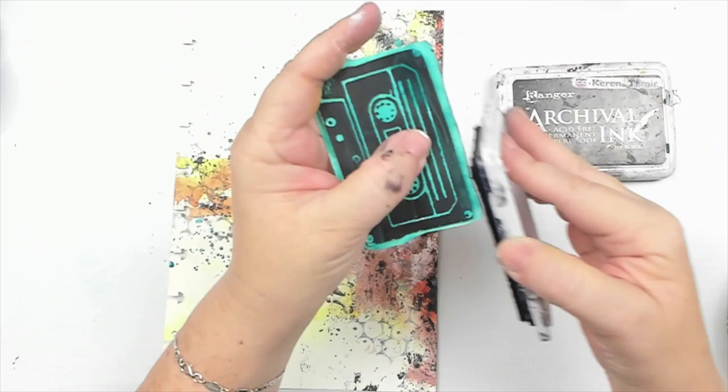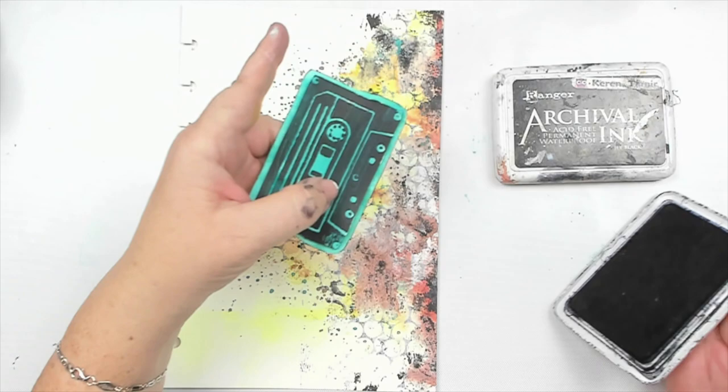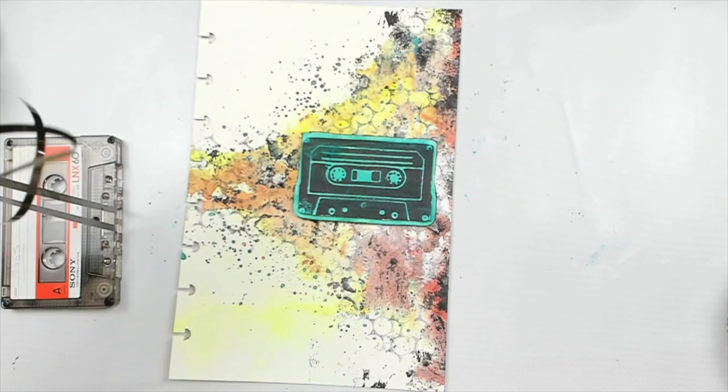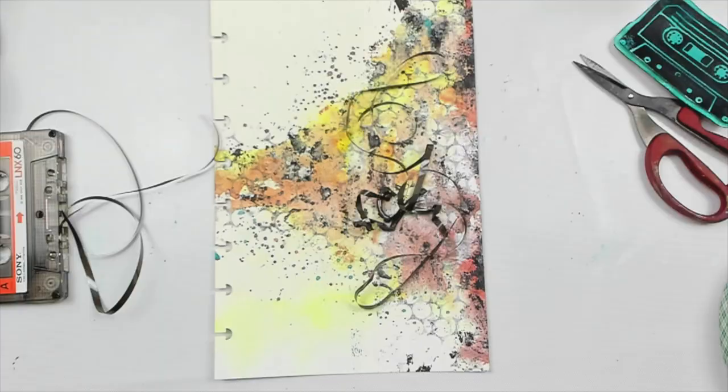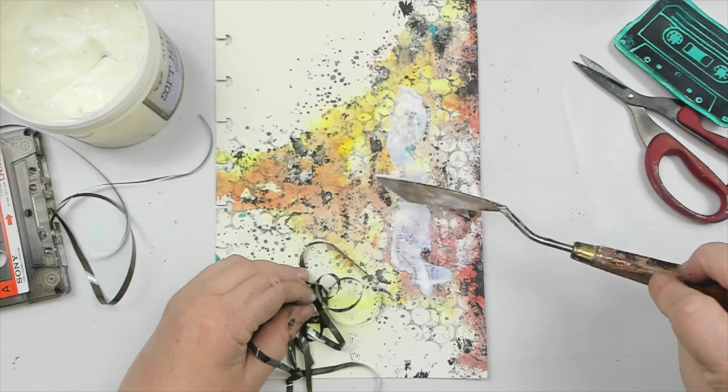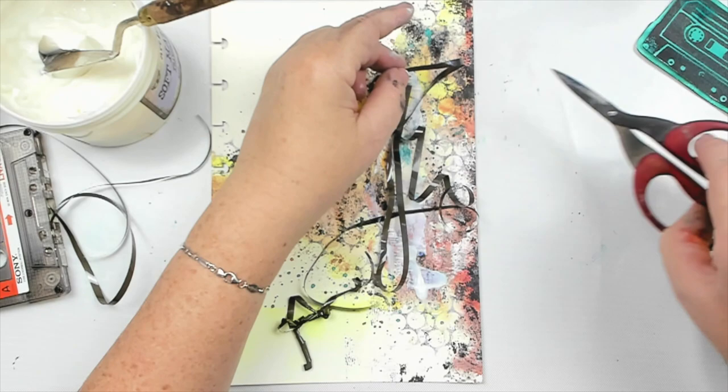To add some texture behind the cassette, I decided to grab an old cassette that I had in my stash, and I cut the film inside the cassette to create strings that were as if they were coming out of the cassette. If you remember in the 80s, when the film would come out, it would be so annoying to put it back in, and all of the strings would be everywhere. So that's what it reminded me of, and I wanted to mimic that as well.